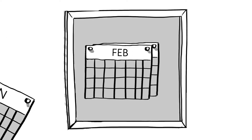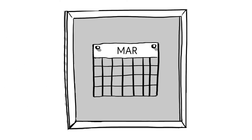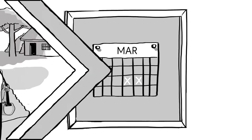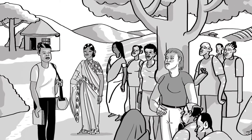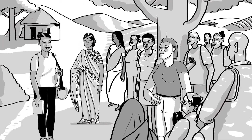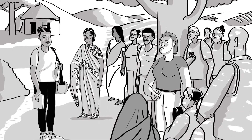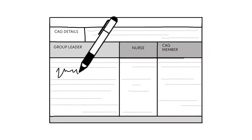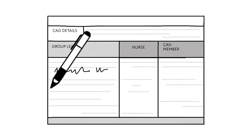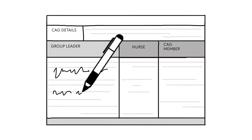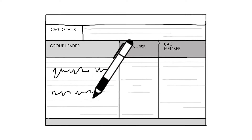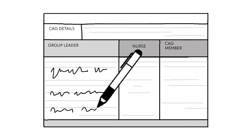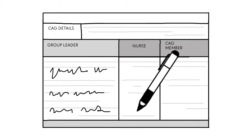Every three months, Mary meets with her group twice. First, they meet on the day before her refill appointment, and this time they decide to meet under the tree next to Rafilwe's house. During their meeting, Rafilwe checks with each group member if they have any symptoms of TB or other concerns, and she records this on the CAG refill form.